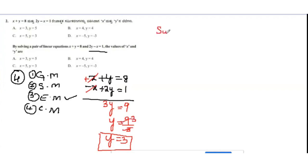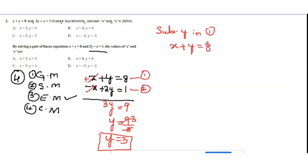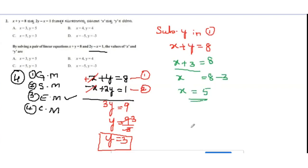y = 9/3 = 3. Now substituting y = 3 into the first equation: x + 3 = 8, so x = 8 − 3 = 5. The correct option is x = 5 and y = 3.